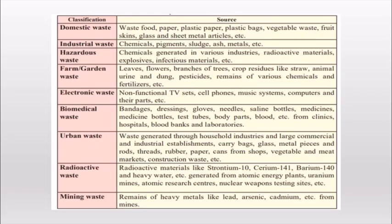Waste management is also important to reduce the strain on natural resources through treatment of solid waste. We try to reuse substances to improve health and quality of life and to maintain environmental balance. Let's look at the different types and sources of waste. First, we have domestic waste — whatever waste is generated in our house, whether it is paper, plastic bags, vegetable peels, or fruits — everything generated at home that we throw in the dustbin is domestic waste.